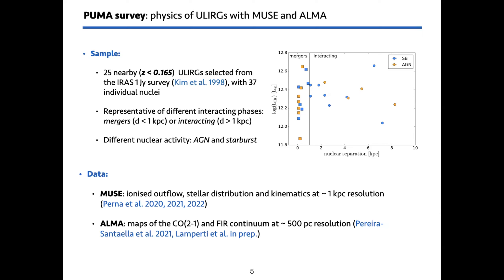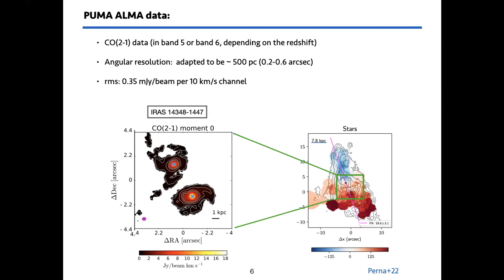We have data from both MUSE and ALMA. From MUSE, the optical spectra allow us to identify the ionized outflow and characterize the stellar distribution and kinematics — the first results of this analysis are already published in a paper by Michele Perna. From the ALMA side we have maps of the CO(2-1) line and the far infrared continuum, and in this talk I'm focusing on the CO(2-1) data which we use to trace the molecular outflow. The angular resolution for our ALMA observations is about 500 parsec.